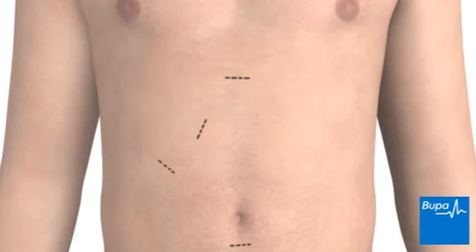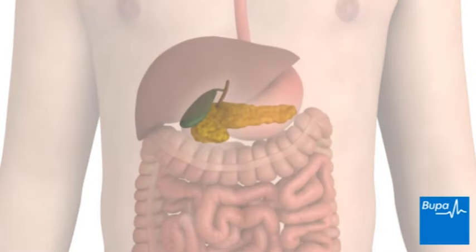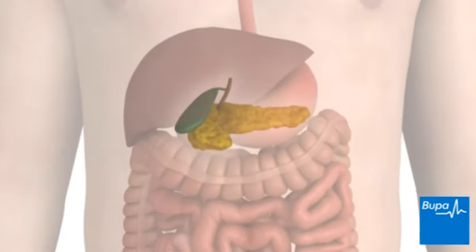A telescopic camera or laparoscope will be passed through one of these cuts. Your surgeon will look through this and the image may be projected onto a video screen. Surgical instruments will also be passed through the cuts.